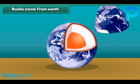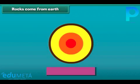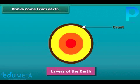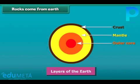All rocks come from Earth, and all three layers of Earth are made up of rocks. The outermost layer of the Earth is called the crust, which is formed by solid rocks. The middle and innermost layers are known as the mantle and the core respectively. The mantle and outer core are very hot, so rocks are found beneath in melted form. In the inner core, rocks are solid due to high pressure.